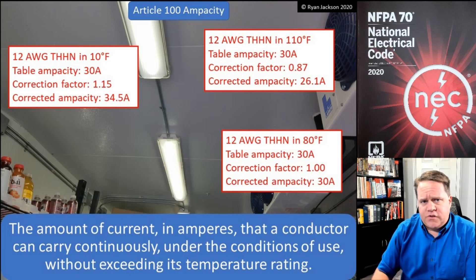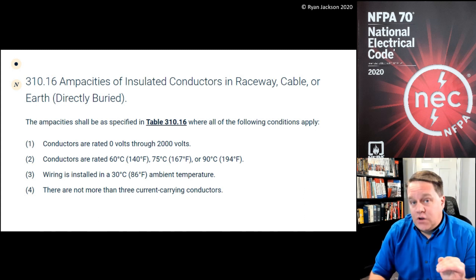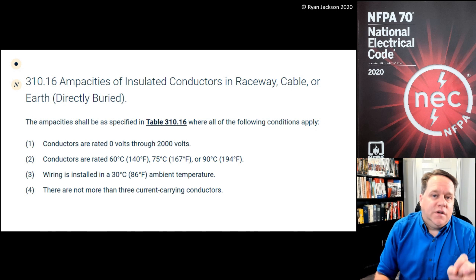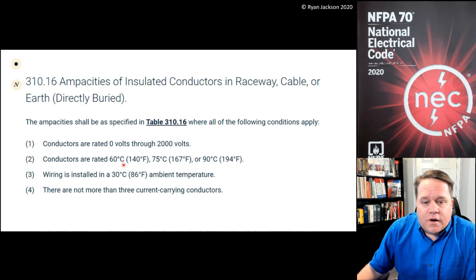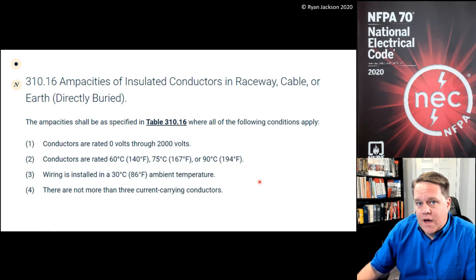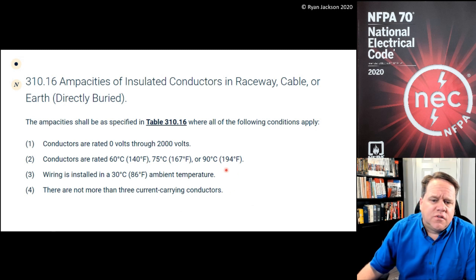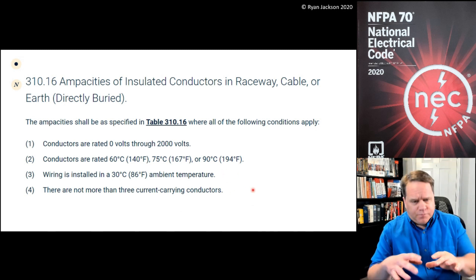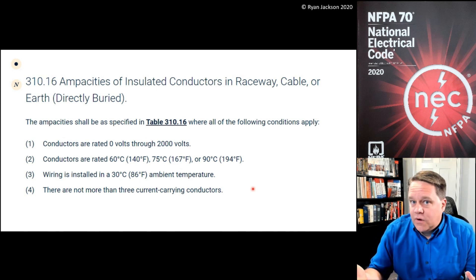Under the conditions of use — what are the conditions of use? If we look at section 310.16, it tells us the conditions of use that the ampacity values in table 310.16 are based on: conductors rated 0 to 2,000 volts, conductors rated 60, 75, or 90 degrees, wiring in an 86°F ambient temperature, and not more than three current-carrying conductors. It's really those last two I want to focus on — those are both conditions of use.